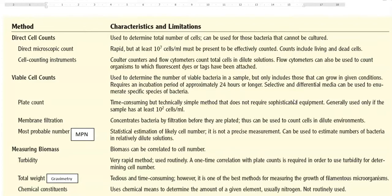One is the direct microscopic count, which refers to counting the number of cells by using microscope. It is a rapid method, but it requires at least 10 to the power 7 cells per ml, then only the counting will be much effective. The main drawback is count includes both living as well as dead cells.